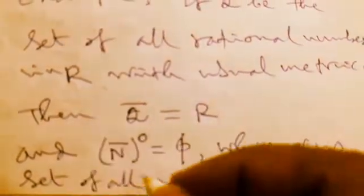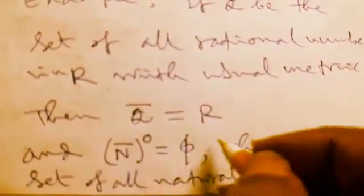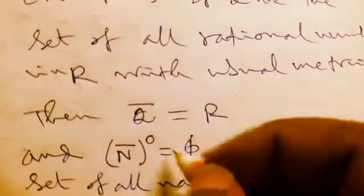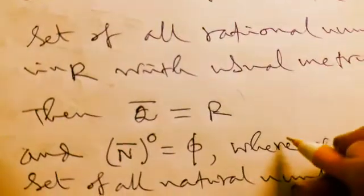It is our notation: N bar degree equals phi, and by definition, N bar degree equals phi is called nowhere dense.